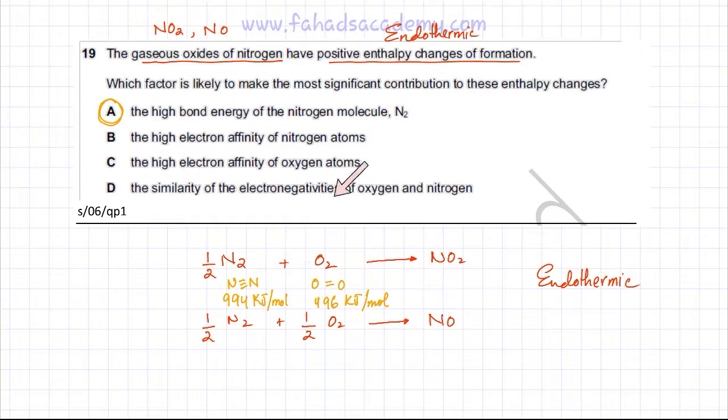The similarity of the electronegativity of oxygen and nitrogen - all the three factors they lead to polarity of a bond, but they don't actually affect the overall enthalpy or the bond strength.